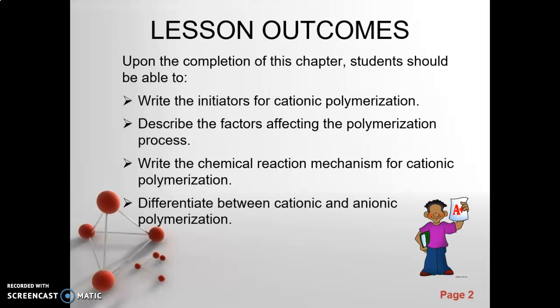The lesson outcomes: upon completion of this chapter, students should be able to write the initiators for cationic polymerization. In cationic polymerization we have three types of initiator, and second, describe the factors affecting the polymerization process by the chemical reaction, and differentiate between cationic and anionic.